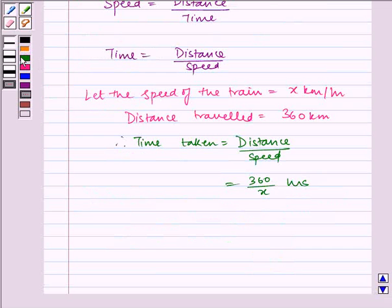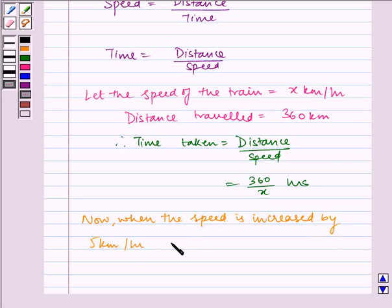Now, when the speed is increased by 5 km per hour, it becomes x plus 5 km per hour.